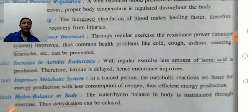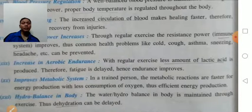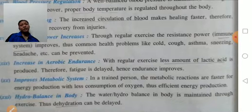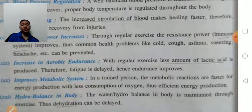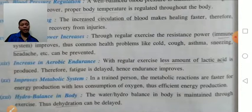Metabolic system: in a trained person, metabolic reactions are faster for energy production with less consumption of oxygen. If the metabolic system improves, then energy production will be more with less consumption of oxygen. Hydro balance: the water or hydro balance in the body is maintained through exercise, thus dehydration can be delayed.